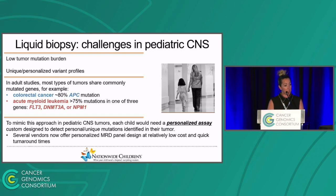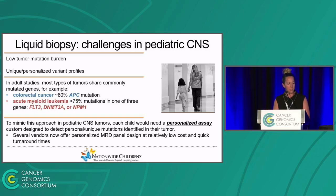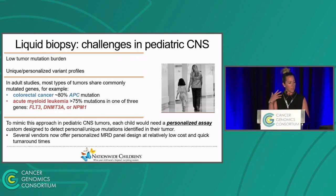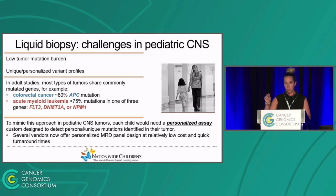In adult studies, where a lot of the liquid biopsy work has been done, many of these assays have been designed to identify cell-free tumor DNA by leveraging the fact that many types of adult tumors share commonly mutated genes. In colorectal cancer, over 80% of tumors have a mutation in APC. In AML, there are three genes that are primarily mutated. So these assay designs are really straightforward, and many vendors have created panels to sequence cell-free DNA targeted at these genes or a subset of genes.